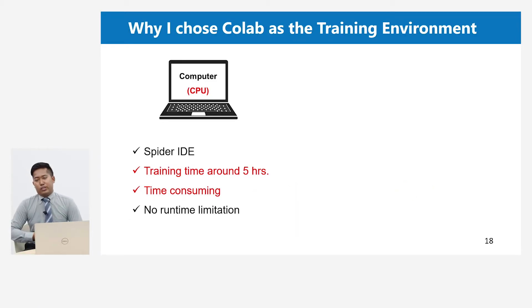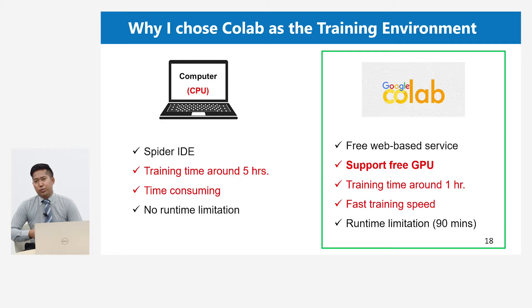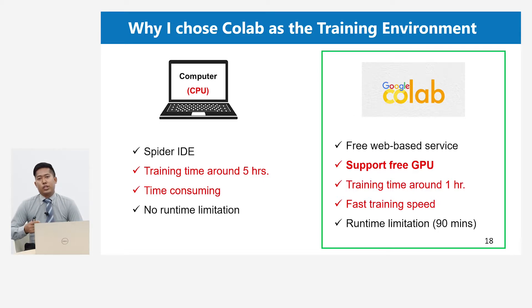For the training environment, first I used my computer with the CPU running on the Spyder environment. Training time took five hours, which was time consuming. I wanted to boost my training speed, so I needed a GPU. Google Colab supports a free GPU, and after switching, training took one hour. Training on Google Colab with the GPU is faster than training on the CPU computer. That's why I chose Google Colab as the training environment.